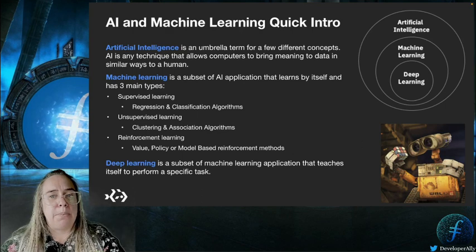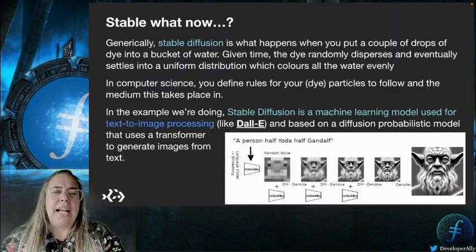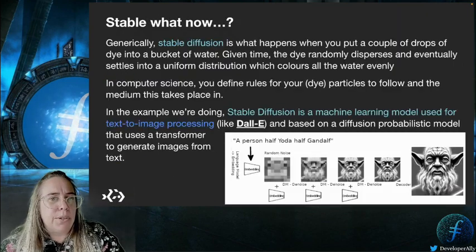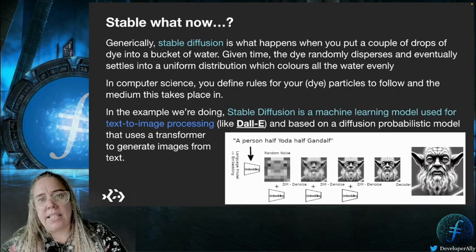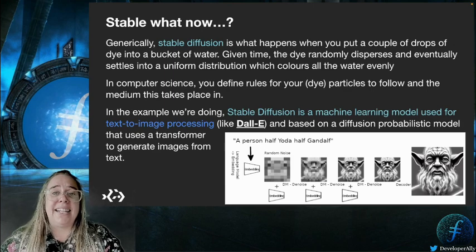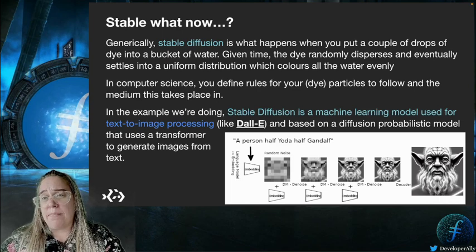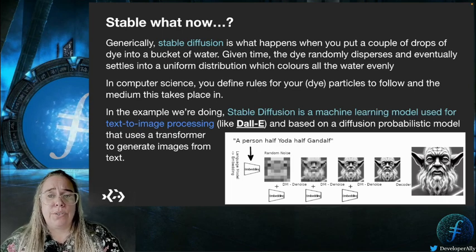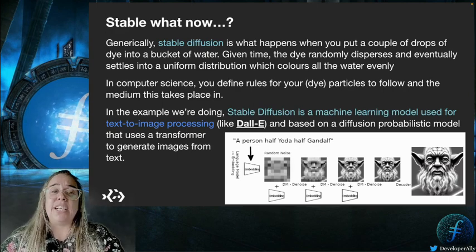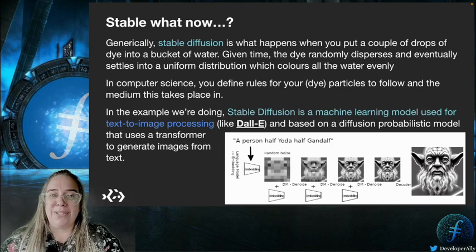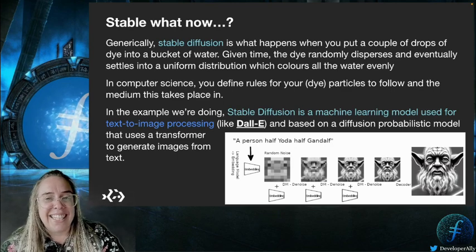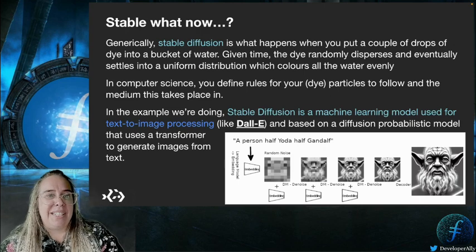In this case, we're converting a text input to an image output. Stable diffusion is the particular model used currently for text-to-image processing and is the same model DALL-E uses. It's based on a diffusion probabilistic model that uses a transformer to generate images from text. In this example, we'll be using a pre-trained model in TensorFlow, Google's open source machine learning library. You don't need to worry about the ins and outs of how it works unless you're curious — and if so, there are lots of resources to explain it.